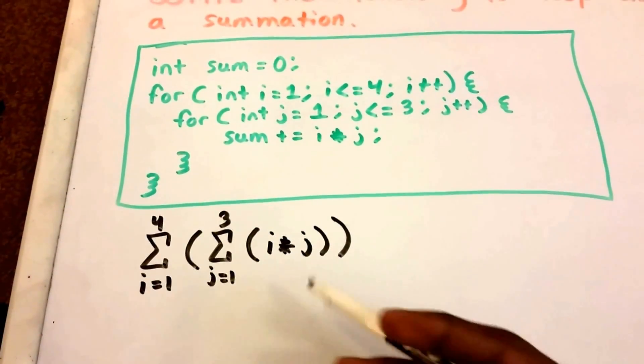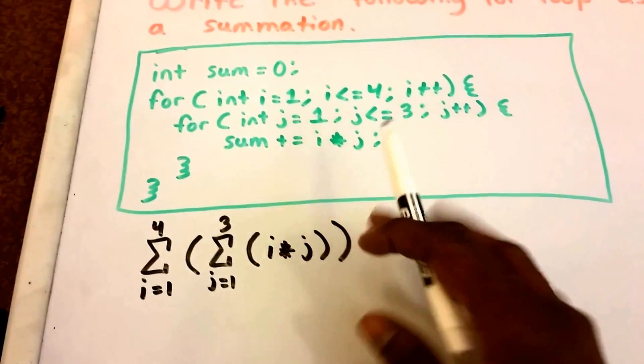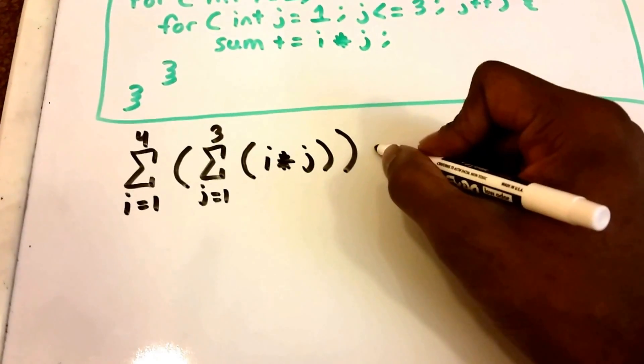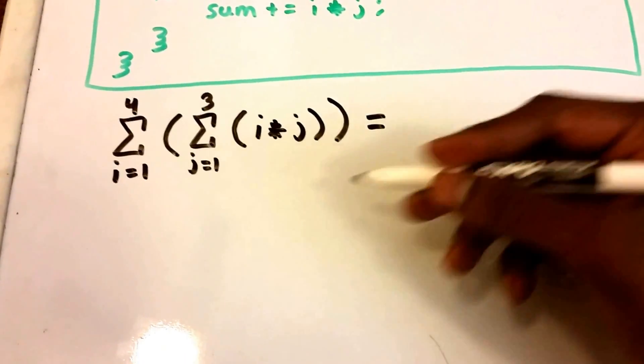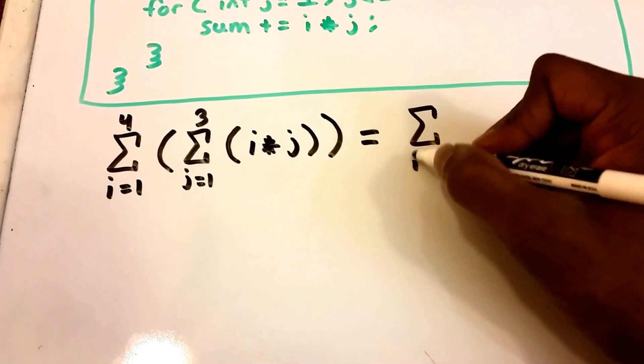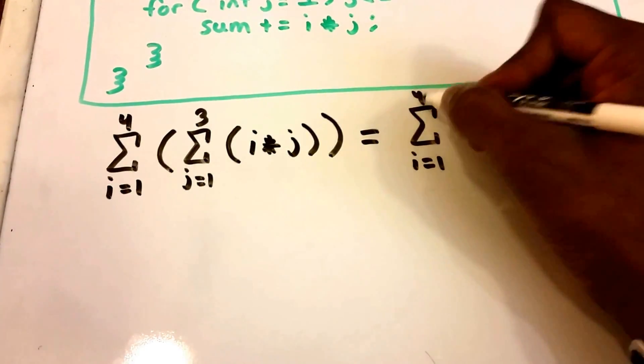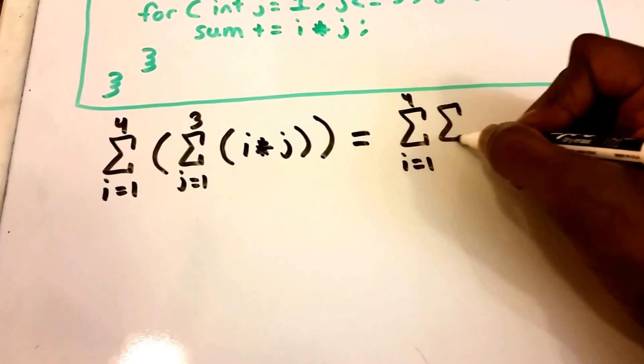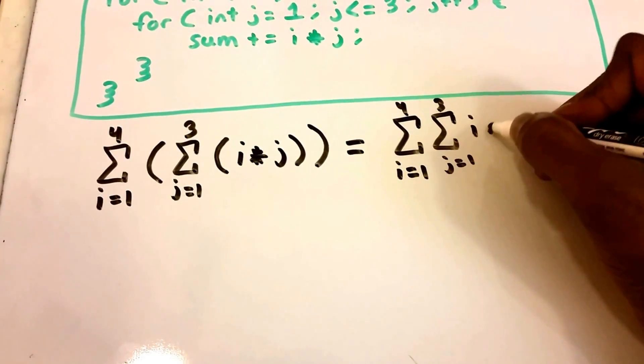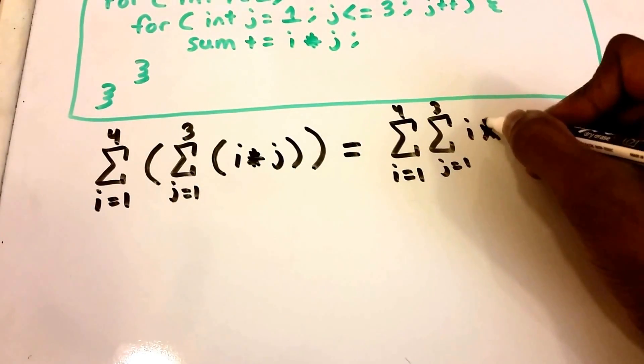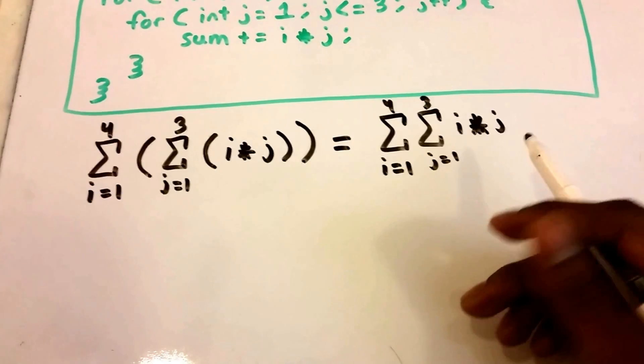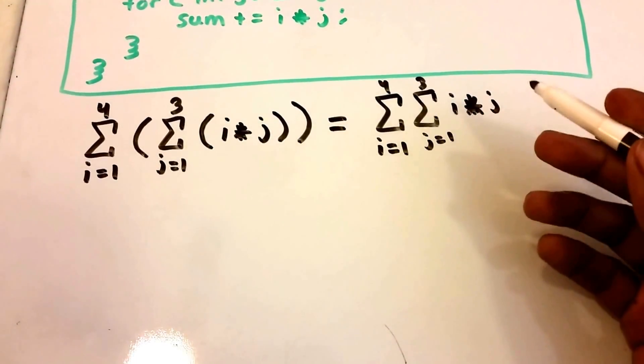So now we've written our for loop or this code fragment as a summation. Okay, so let's go ahead and try to solve it. So I'm going to simplify this a little bit, make it without the parentheses, so I'm going to rewrite it here again without the parentheses.